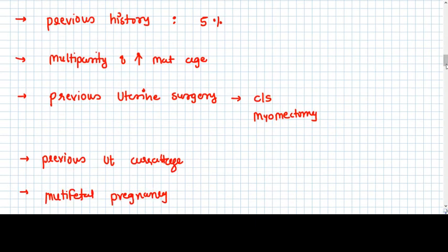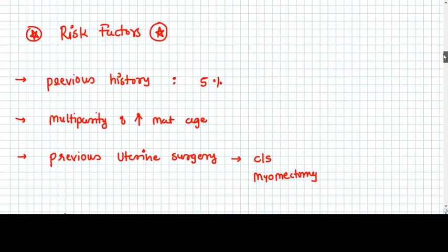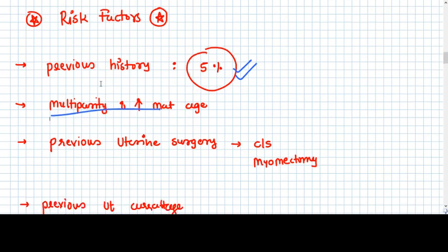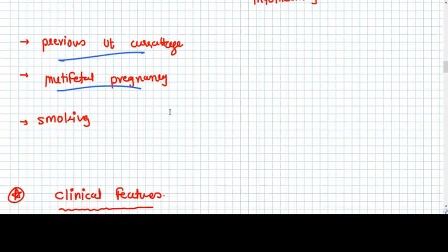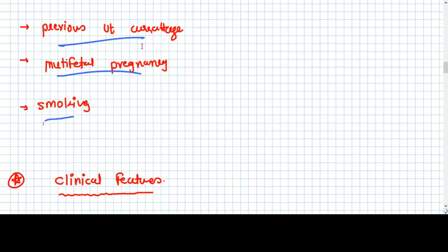Now the risk factors of placenta previa. Many risk factors, and the most important risk factor is previous history. With previous history and increasing amount of cesarean sections, the incidence of placenta previa is ever growing. Previous cesarean, one percent; previous five percent chances of placenta previa. With multiparity, chances increase. Previous uterine surgery, either cesarean or myomectomy increases the chance. Previous uterine curettage also creates placenta previa. Multifetal pregnancy also goes for placenta previa. Smoking also increases placenta previa.